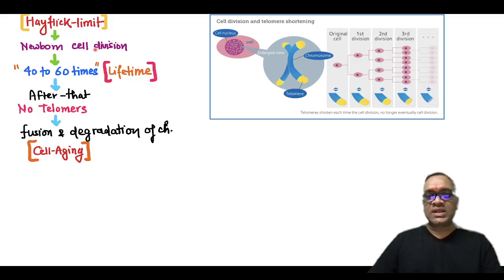Hayflick limit: newborn cells are destined for 40 to 60 times of division in their whole lifetime. This is called Hayflick limit because after 40 to 60 times of division, there will be no telomere. All telomeres will be used up and that is why chromosomes will fuse and they will have degradation of the chromosomes.